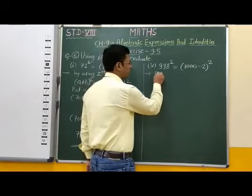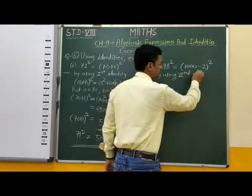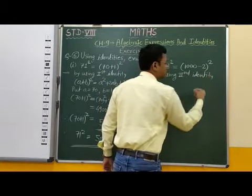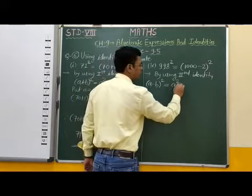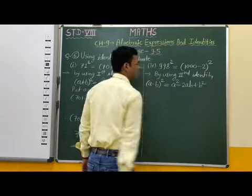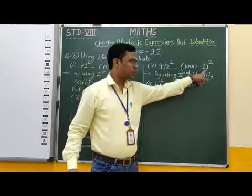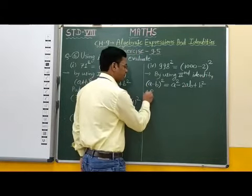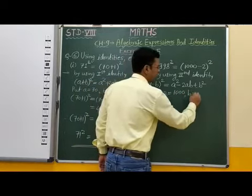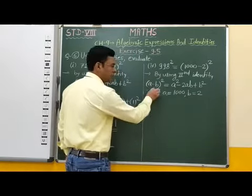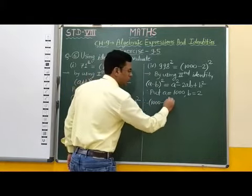By using the second identity: a minus b, whole bracket squared, is equal to a squared minus 2ab plus b squared. In this identity we put a equal to 1000 and b equal to 2. So we write 1000 minus 2, whole bracket squared equals 1000 squared minus 2 into 1000 into 2 plus 2 squared.